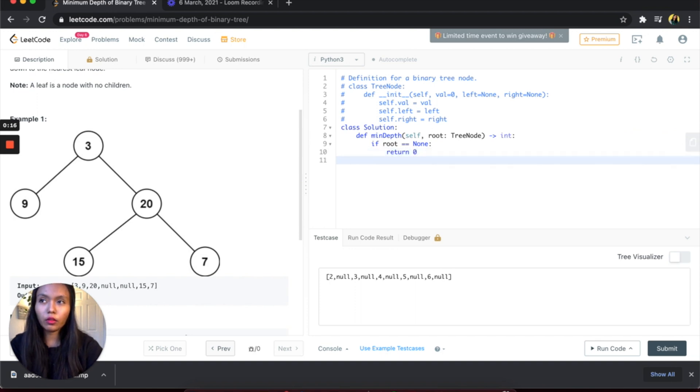Else, what we want to check is the left depth and the right depth. I will say left depth equals, and we're going to call this function recursively, so we'll say self.min_depth and pass it root.left. Similarly, we'll get the right depth, so right depth equals self.min_depth and we're going to pass it root.right.